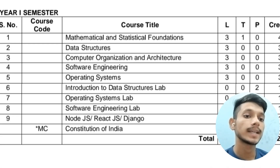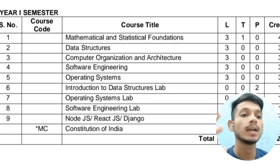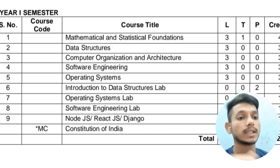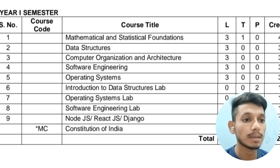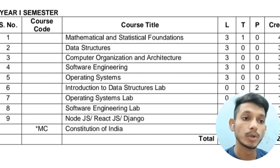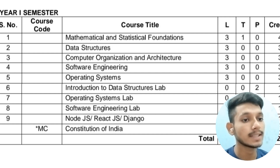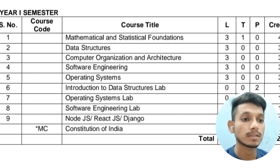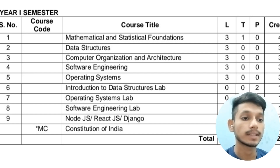Now let's move on to the syllabus of second year. In the first semester of second year, you will have nine subjects including labs and a non-credited subject. The subjects are: Mathematical and Statistical Foundations, Data Structures, Computer Organization and Architecture, Software Engineering, Operating Systems, a Data Structures Lab, an Operating Systems Lab, a Software Engineering Lab, and a subject related to Node.js, React.js, and Django.